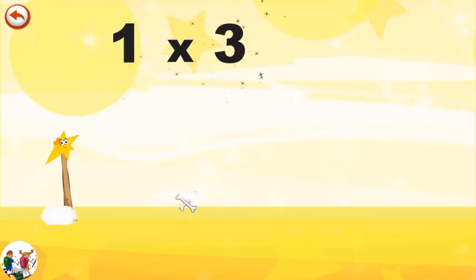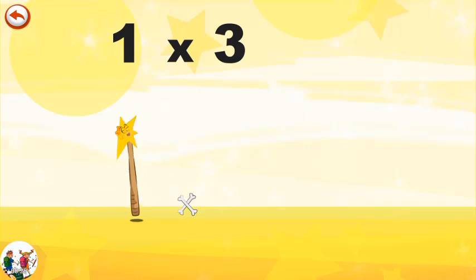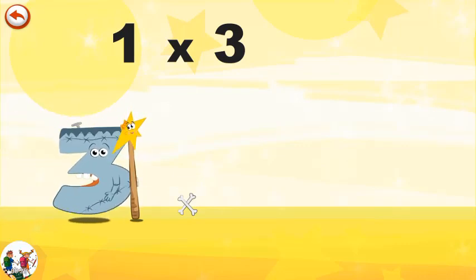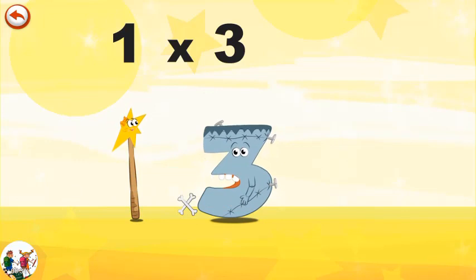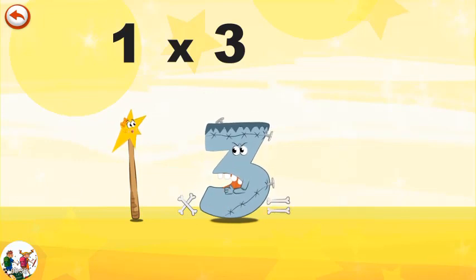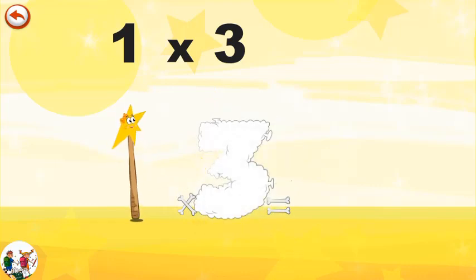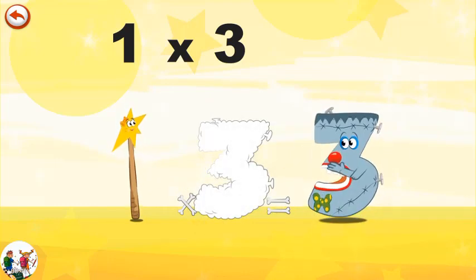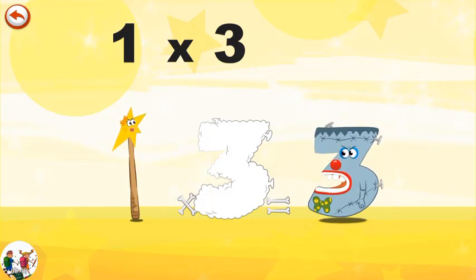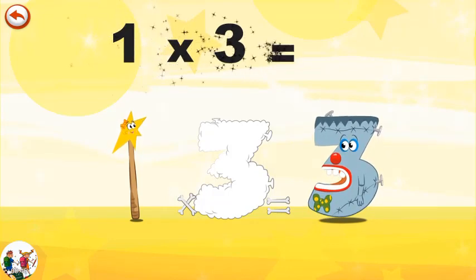What's the story of one times three? Mrs. Wonder Wand can't help playing tricks on her friends. When she comes across Mr. Threkenstein, she casts a spell and changes him into Threkenstein Clown. One times three is three.